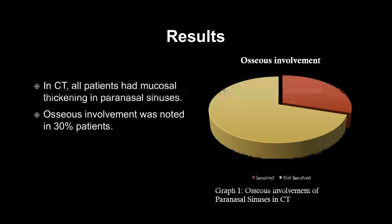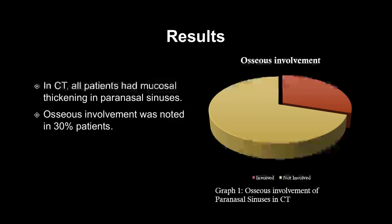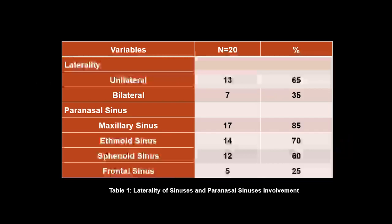On CT, all patients had mucosal thickening in paranasal sinuses, and osseous involvement was noted in 30 percent of patients. As seen in the pie chart, osseous involvement of paranasal sinuses is present in 30 percent while absent in 70 percent. Most patients had unilateral disease; the most commonly involved sinus was maxillary, followed by ethmoid sinus.